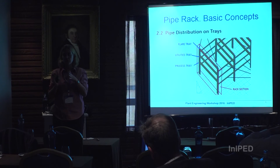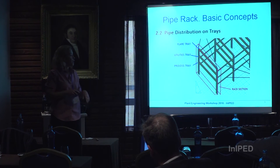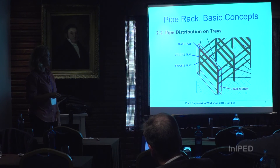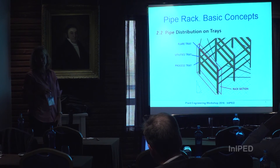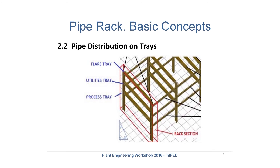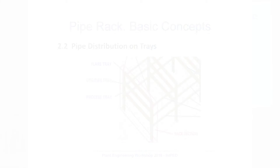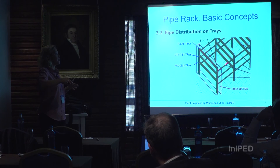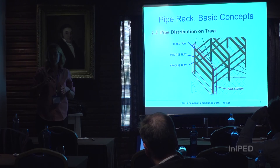Most clients don't want to have pipes and cable trays together. So usually the instrument and electrical tray is placed between the utility tray and the flare tray. This is the most common order of the lines: the process tray has all the process lines, the utility tray has all the utility lines, and the flare tray is always on the last level — on top.